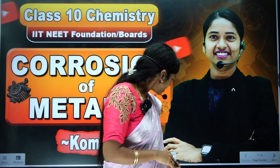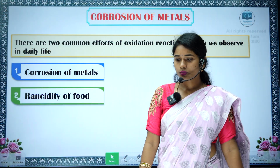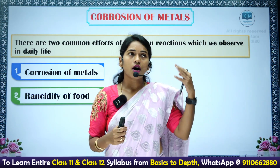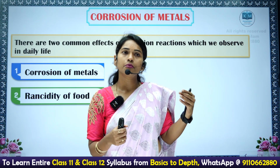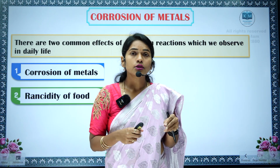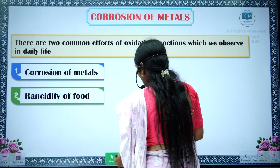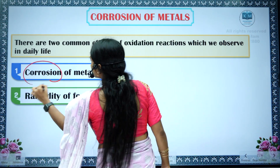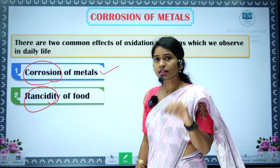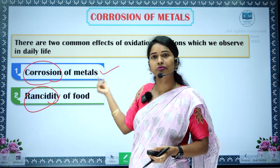Very easy topic. What is this corrosion? Last class we discussed about oxidation. Oxidation of metals may happen, or oxidation of food may happen. Oxidation of metals we call as corrosion, and oxidation of food we call as rancidity. In this session, I am going to talk about corrosion. Corrosion means oxidation of metals.